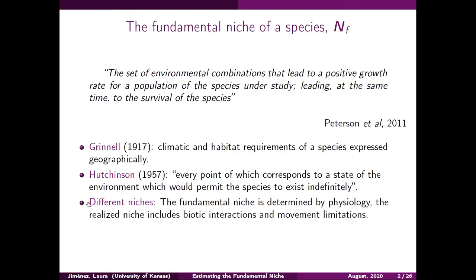I'm going to be making the distinction between the three different types of niches that come from Hutchinson's inequalities: the fundamental niche, which is determined by the physiology of the species; the existing niche, which also takes into account the limitations of geography — not every environmental combination in environmental space exists, so the existing niche is smaller than the fundamental; and finally the realized niche, which also includes biotic interactions and the dispersal limitations of the species.